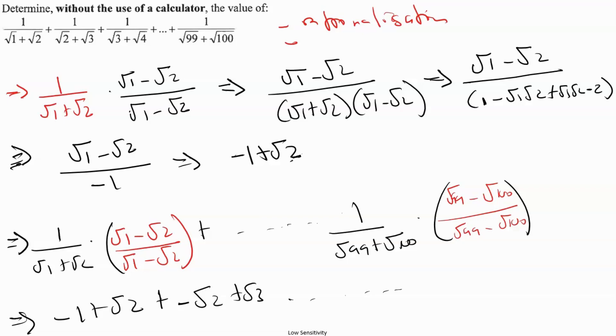Right, okay. So we simplify. The first one is minus 1 plus root 2 minus root 2 plus root 3, and we continue until we get to minus root 99 plus root 100.